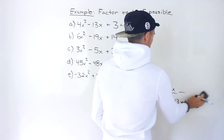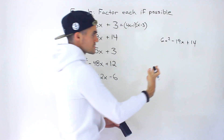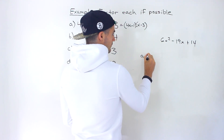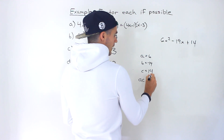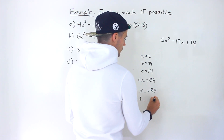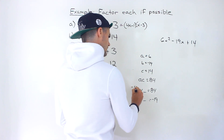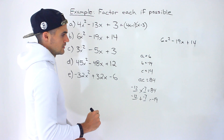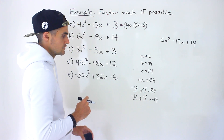Moving on to part B: 6x² minus 19x plus 14. First check — can we take anything out between 6, 19, and 14? We can't, so let's go into decomposition. A is 6, B is negative 19, C is 14. The AC value is 14 times 6, which gives us 84. We need two numbers that multiply to 84 and add up to negative 19. Those numbers are negative 12 and negative 7: negative 12 times negative 7 is positive 84, and negative 12 plus negative 7 equals negative 19.